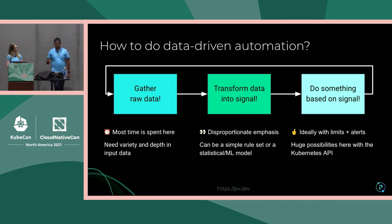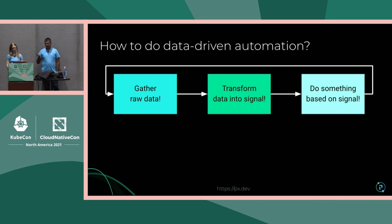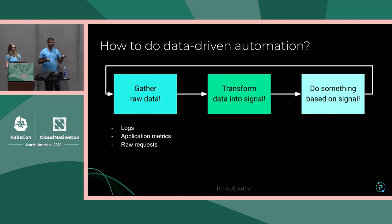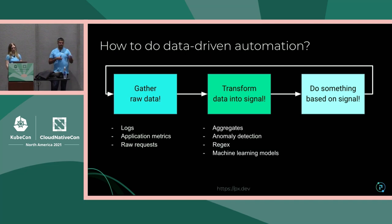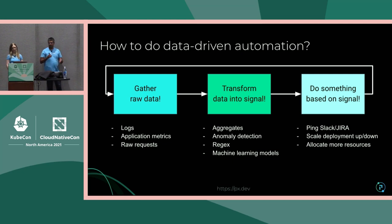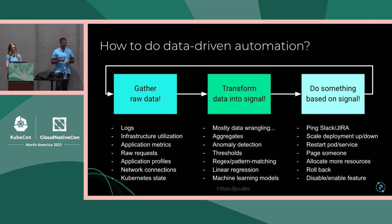There are a lot of steps here. For raw data, typically people are looking at logs, metrics, and requests. For transformations, you're looking at aggregates, anomaly detection, and regular expressions. On the signal-based automation side, you're basically looking at trying to update some systems or allocate more resources. There are more things you can do, but those are the key ones relevant to this talk.